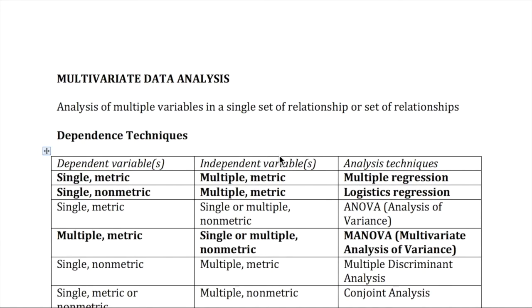Multivariate analysis refers to all statistical techniques that simultaneously analyze multiple measurements on individual objects under investigation. Accordingly, any analysis of more than two variables can be loosely considered multivariate analysis. Many multivariate techniques are extensions of univariate analysis and bivariate analysis.